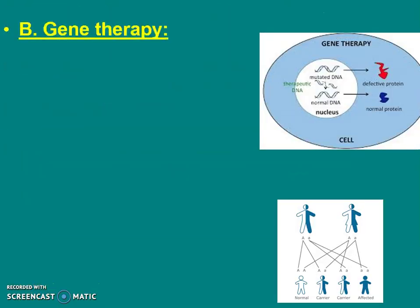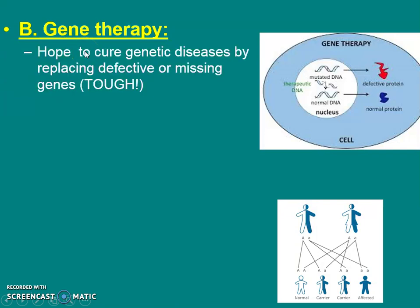We call trying to fix the disease gene therapy — if I can replace or cure a defective or missing gene, that would be really cool. Scientists are really struggling with this right now, so it's cutting edge. We're hoping scientists figure out gene therapy for many diseases in the near future. Some are in trial, but they're not perfect yet.